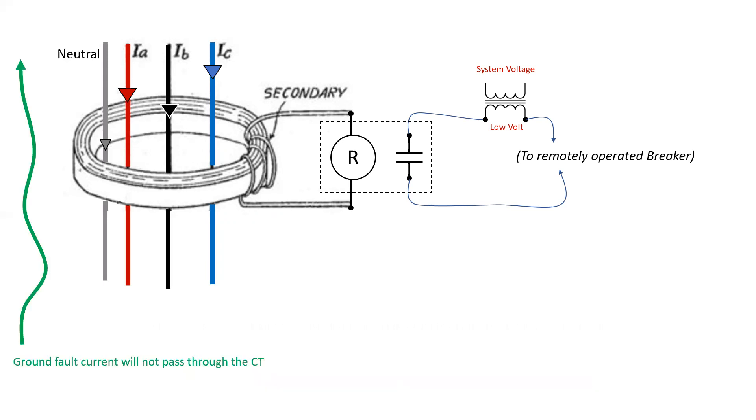So here we have some ground fault current that is not passing through the CT, which causes a resultant flux. This will cause current to flow in the secondary of the CT, which causes a voltage to be developed across the coil of the relay. The relay energizes, closing the contacts and applying voltage to the shunt trip breaker, which opens the breaker.